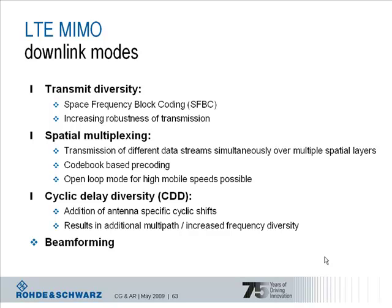There is an open loop mode and a closed loop mode available for this spatial multiplexing scheme. The closed loop mode relies on UE feedback and the open loop mode is beneficial at high mobile speeds where the UE feedback may not be reliable anyway. So then the base station can operate in open loop mode.